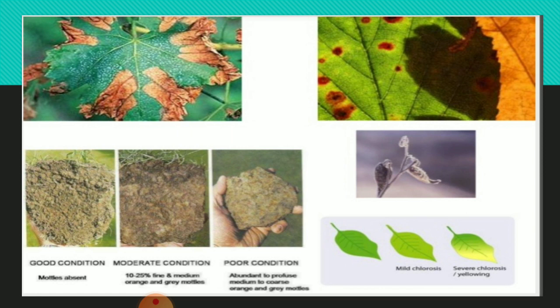The slides show leaf symptom images: mild chlorosis in early stages progressing to severe chlorosis with complete yellowing of leaves, necrosis, and mottles. Soil condition images show good, moderate, and poor conditions with corresponding changes in microorganism levels at each stage, demonstrating how soil pollution can be assessed through these visual and biological indicators.